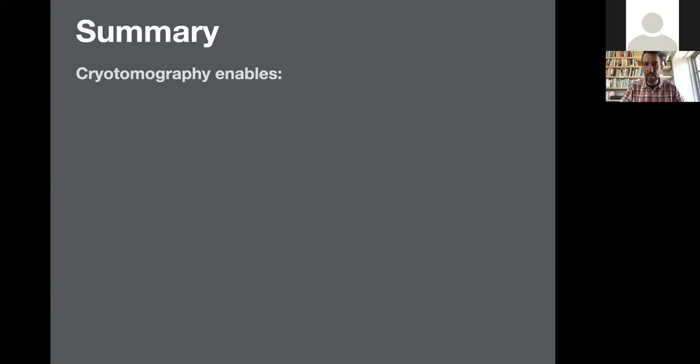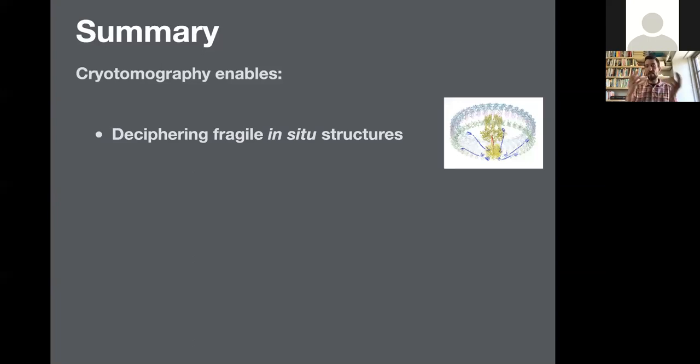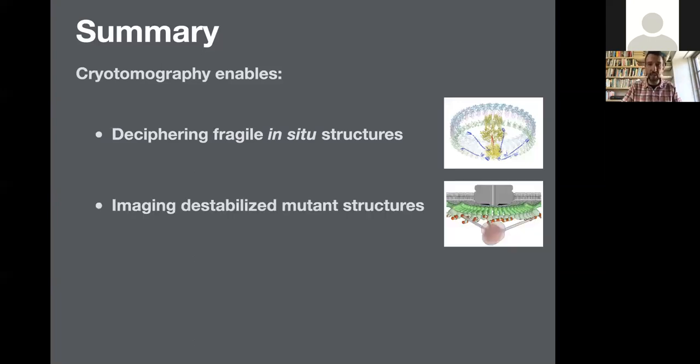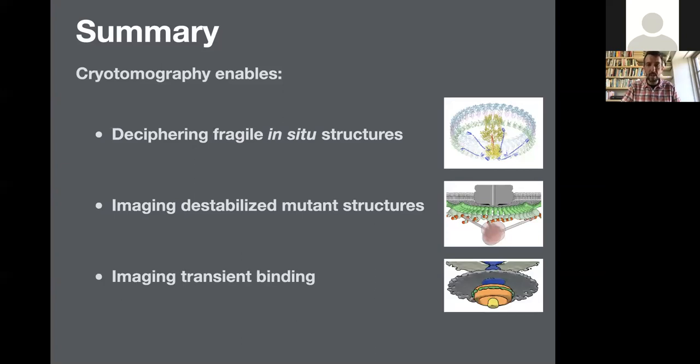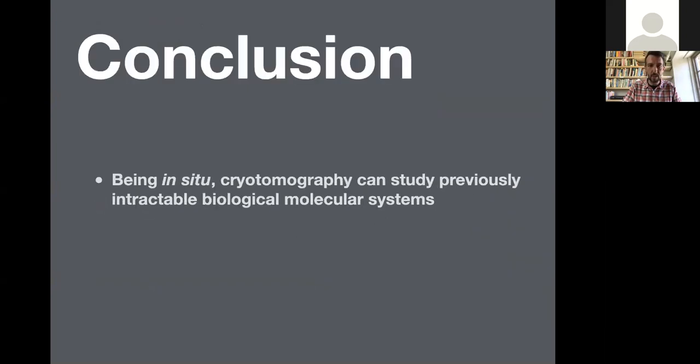I better call it quits, but what I hope I've tried to get across to you guys as a probably quite diverse audience is that what cryotomography is enabling us as biologists is insights into deciphering fragile in-situ molecular structures, imaging destabilized mutant structures that we might never be able to purify, and to ambient transient biologically relevant binding events in the cell. The next steps to massively improve our resolution. We're building on that by increasing throughput, increasing image quality, and really at bottom line what we're doing is studying previously intractable biological molecular systems.